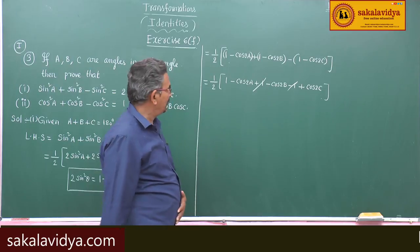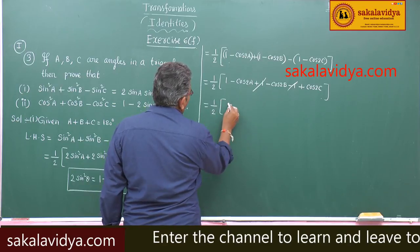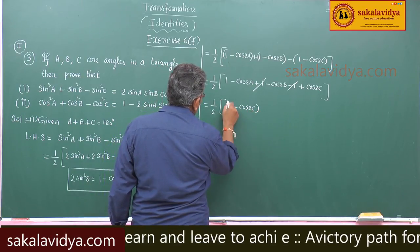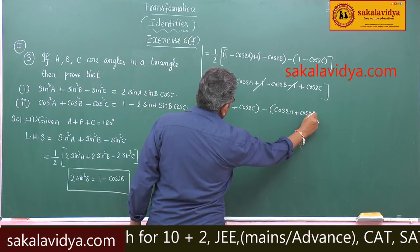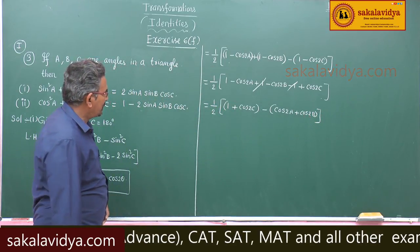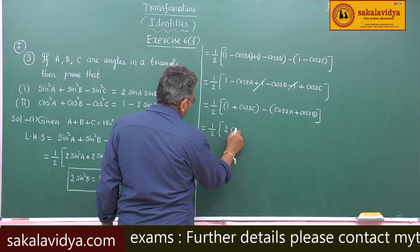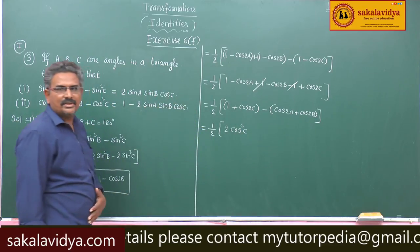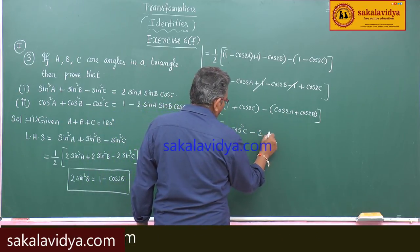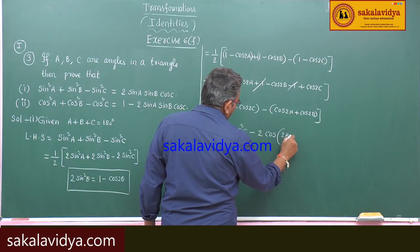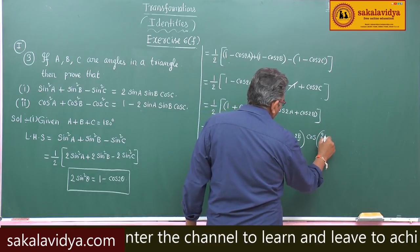Here, plus 1 minus 1 cancels. We have 1/2 into (1 plus cos 2c minus cos 2a minus cos 2b). Now 1 plus cos 2c can be written as 2 cos²c. And applying the cos C plus cos D formula to minus (cos 2a plus cos 2b): minus 2 cos(a plus b) cos(a minus b).